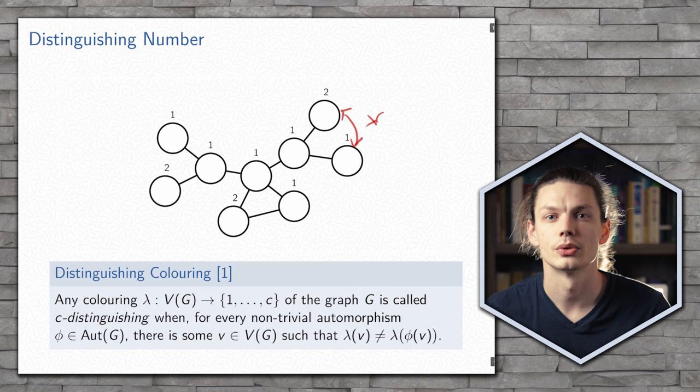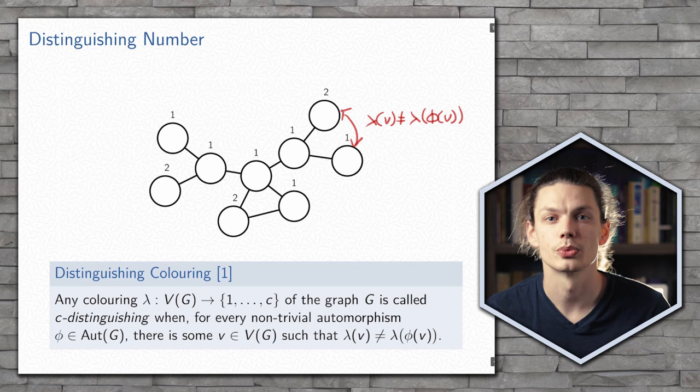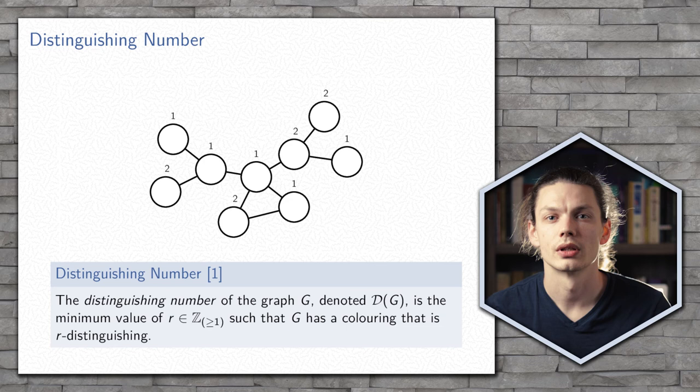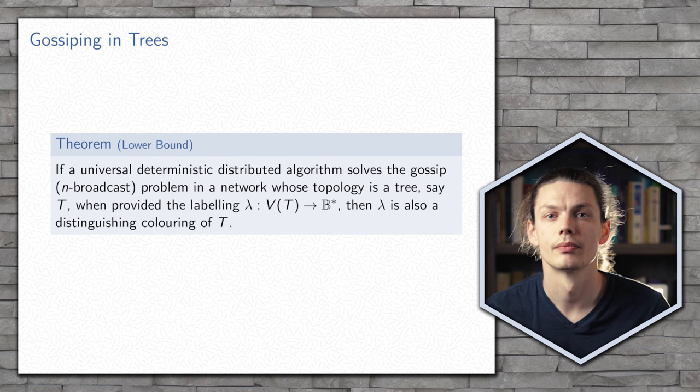So we have to change those. Once we've changed these to a different colour, when we interchange these leaves or corners, the labelling is no longer preserved. Finally, we have the automorphism that exchanges the two branches, and we can take care of this by labelling one of these internal nodes as a different colour. The distinguishing number is the smallest number of labels that can be used to trivialise the automorphism group.